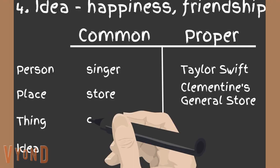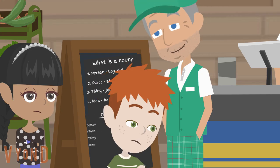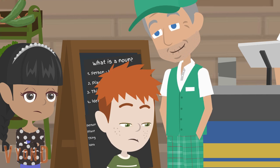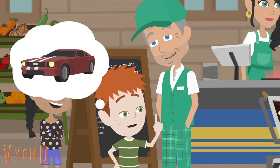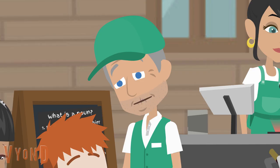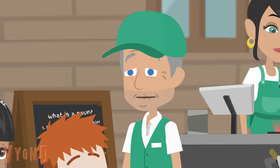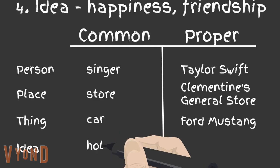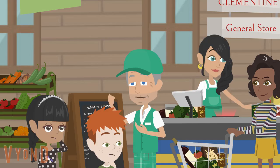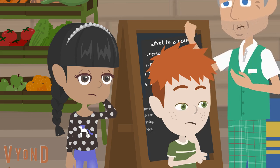For thing, let's put car. So Brian, what's your favorite make and model? Ford Mustang. Just like my brothers — that car is sweet. You talk about styling. The last category is idea. This one can be a bit tricky because it's more abstract. Let's put holiday as a common noun. So give me the name of a specific holiday.